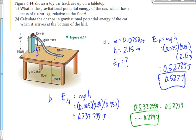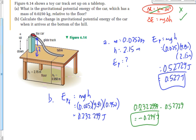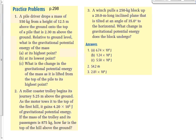We could have used delta E = mg(delta H) here, and it would have given the correct answer. That's because H is linearly related to E — H isn't squared. So if you make one delta you can make the other delta. This works for gravitational PE but not for kinetic energy, because v is squared and it's not a linear relationship. Alright, let's try the questions on page 298.